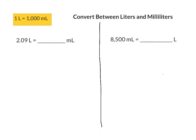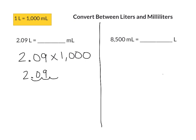Now let's look at converting between liters and milliliters. When you're going from a larger unit to a smaller unit, you're going to be multiplying by the conversion factor. In this case, one liter equals 1,000 milliliters. So we take our amount of liters and multiply by 1,000 to find how many milliliters that equals — moving our decimal point three places to the right and adding a zero to the place we created. Two and 9 hundredths liters is equal to 2,090 milliliters.